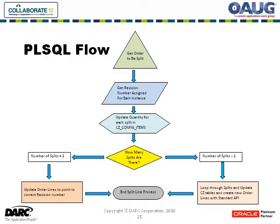Let's take a look at how the PL/SQL flows. When the process is called, we look at the order that needs to be split. The procedure gets the revision number assigned for each instance, and we end up updating the quantity for each split in CZ config items — within the actual table.